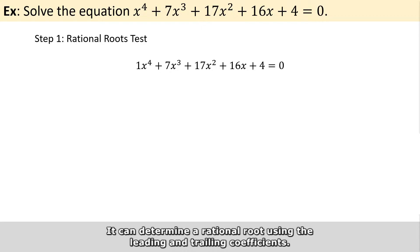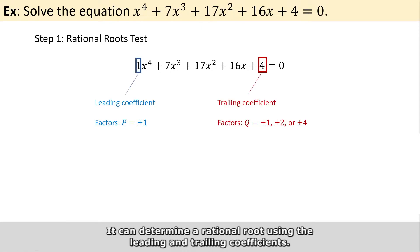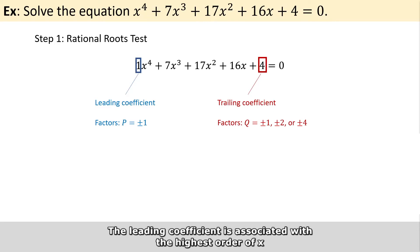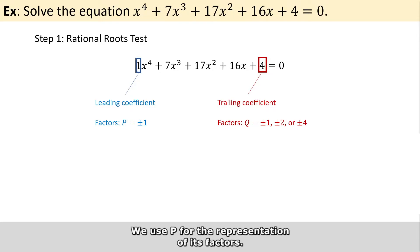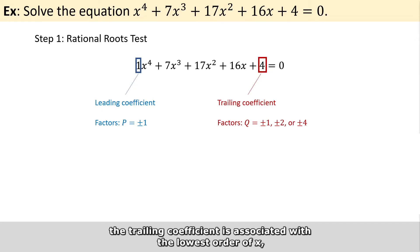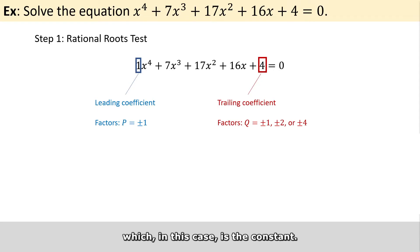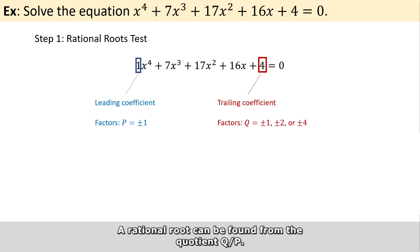The rational roots test can determine rational roots using the leading and trailing coefficients in the polynomial. The leading coefficient is associated with the highest order of x, which is 1 in this case. We use p for the representation of its factors. On the other hand, the trailing coefficient is associated with the lowest order of x, which in this case is the constant, and we use q to indicate its factors. A rational root can be found from the quotient q over p.